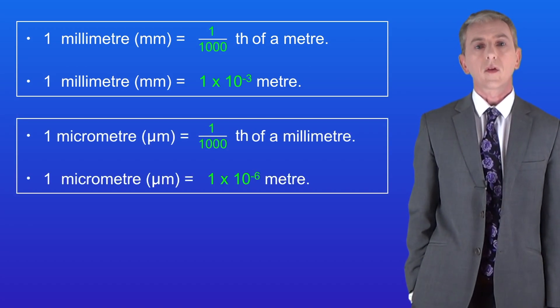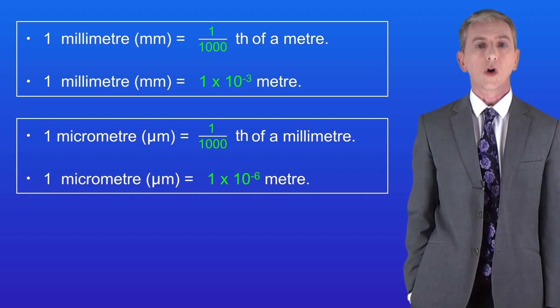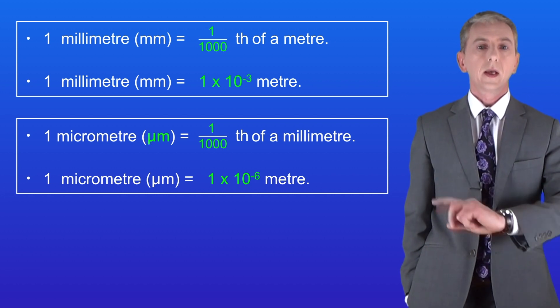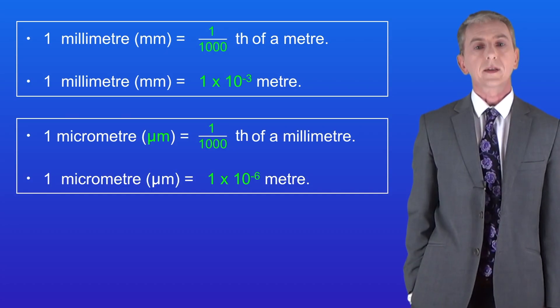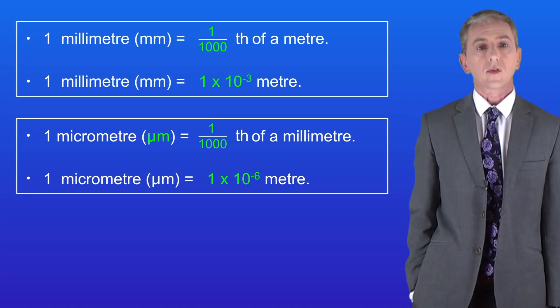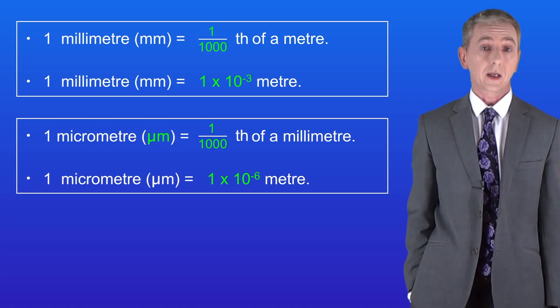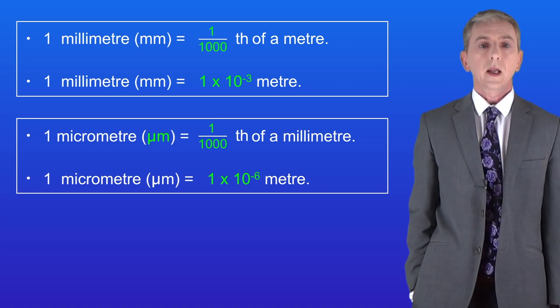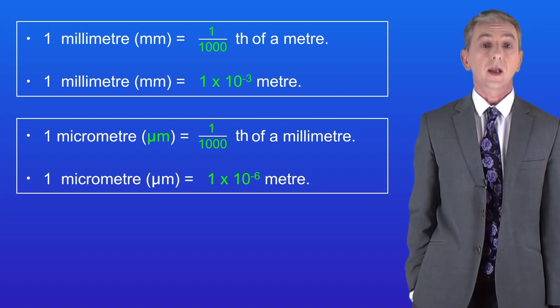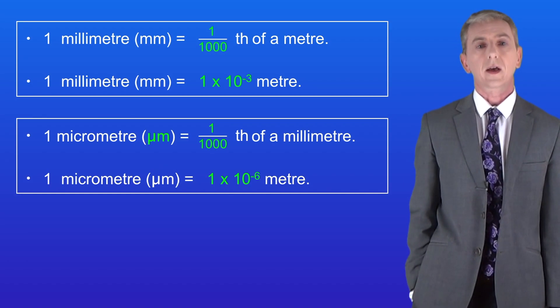Now if we take a thousandth of a millimeter then we've got a micrometer and a micrometer has this symbol. In standard form a micrometer is one times ten to the power of minus six meters. So in other words a micrometer is one millionth of a meter. Now a micrometer is pretty small but in chemistry we'd still consider a micrometer to be a fairly big size.